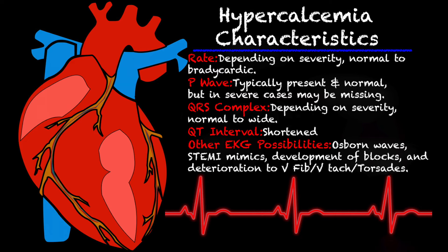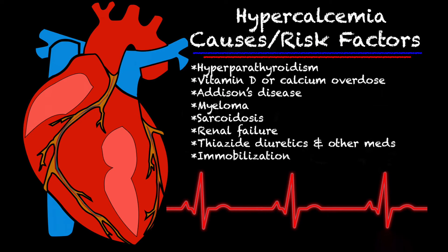Unfortunately, the deterioration to V-fib, V-tach, or torsades can totally happen with very high levels of calcium. Some causes and risk factors of hypercalcemia include hyperparathyroidism, which actually makes up 85 to 90% of cases. Other causes could be vitamin D or calcium overdoses, Addison's disease, myeloma, sarcoidosis, renal failure, thiazide diuretics and other medications, and immobilization.